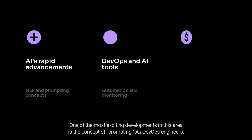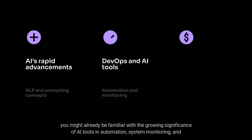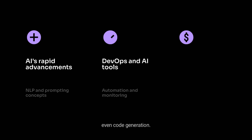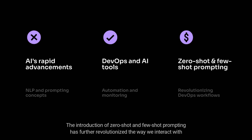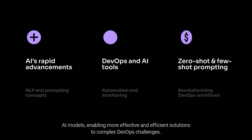As DevOps engineers, you might already be familiar with the growing significance of AI tools in automation, system monitoring, and even code generation. The introduction of Zero-shot and Few-shot Prompting has further revolutionized the way we interact with our AI models, enabling more effective and efficient solutions to complex DevOps challenges.